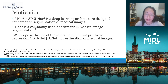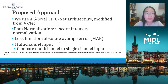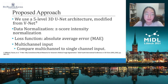So instead of outputting the class of each voxel, we are outputting a separate regression value for each voxel in the image. We use a five-level 3D U-Net architecture modified from V-Net, and we perform data normalization using Z-score intensity normalization.